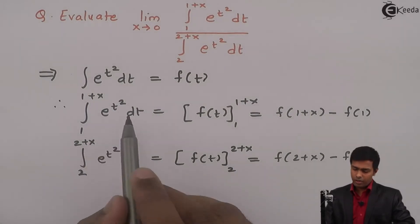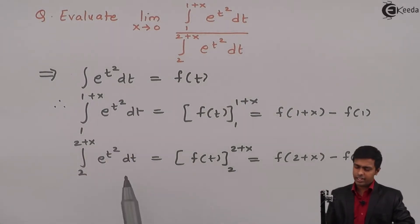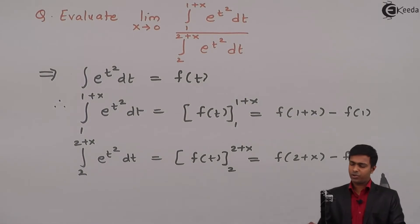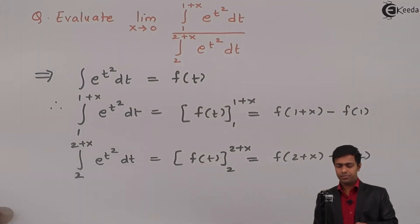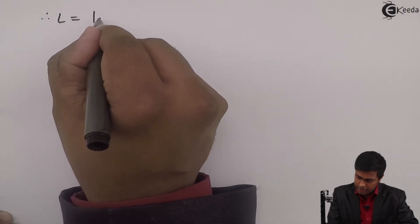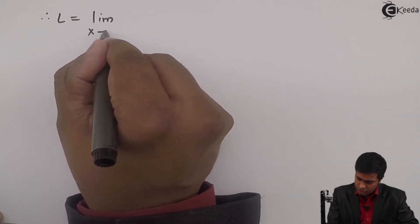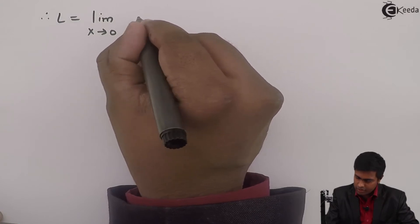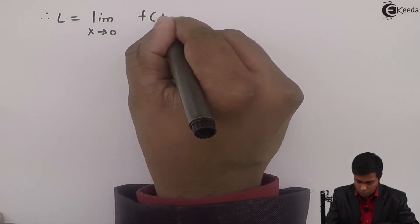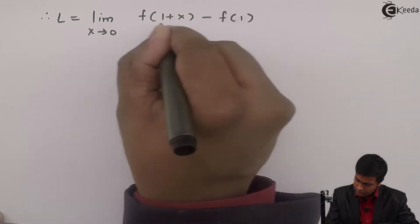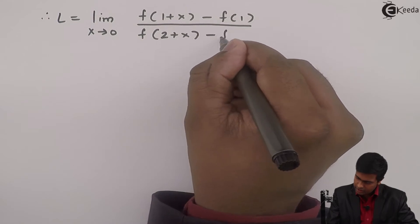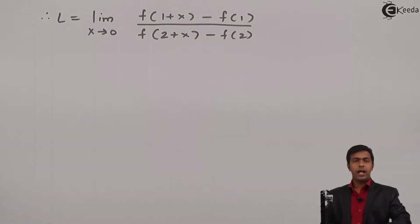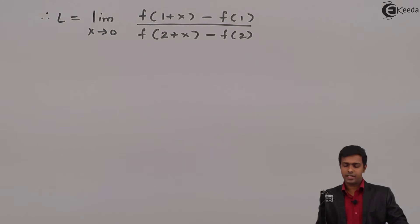We got the value of the numerator in terms of x and the value of the denominator in terms of x. Now we will substitute these values to evaluate the limit. So we get L = limit x→0 of [f(1+x) − f(1)] / [f(2+x) − f(2)].